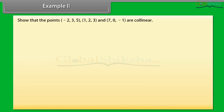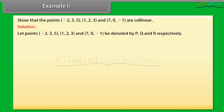Example 2: show that the points (−2, 3, 5), (1, 2, 3) and (7, 0, −1) are collinear. Solution: let the points (−2, 3, 5), (1, 2, 3) and (7, 0, −1) be denoted by P, Q and R respectively.